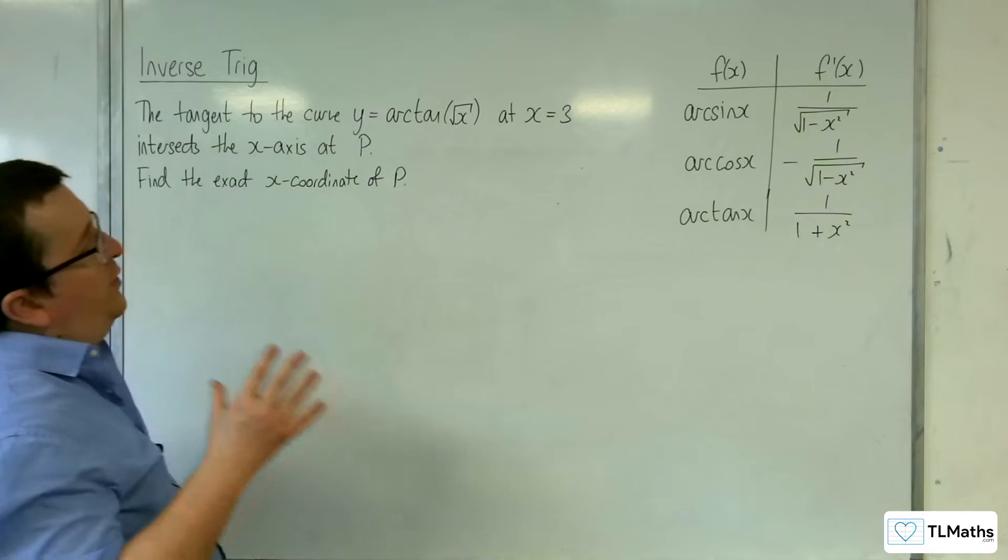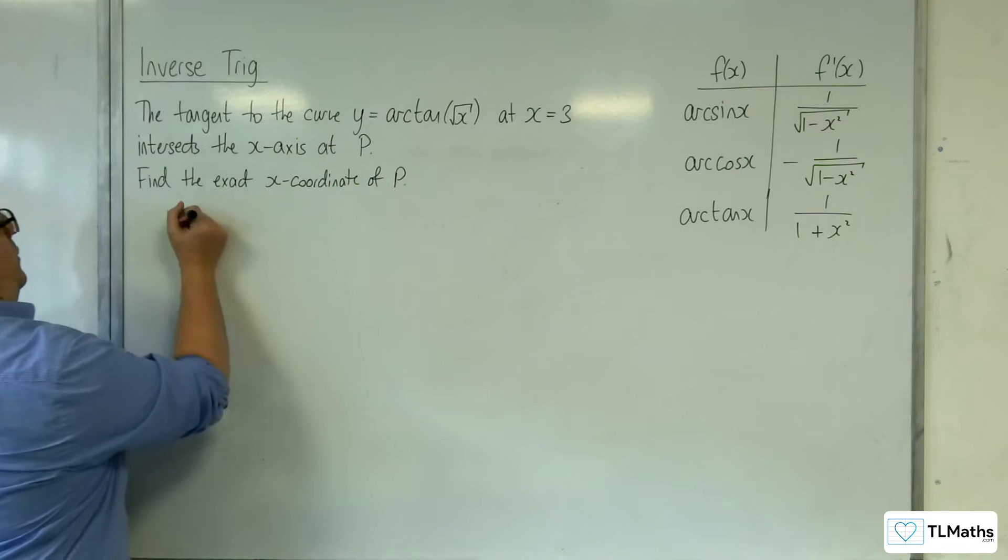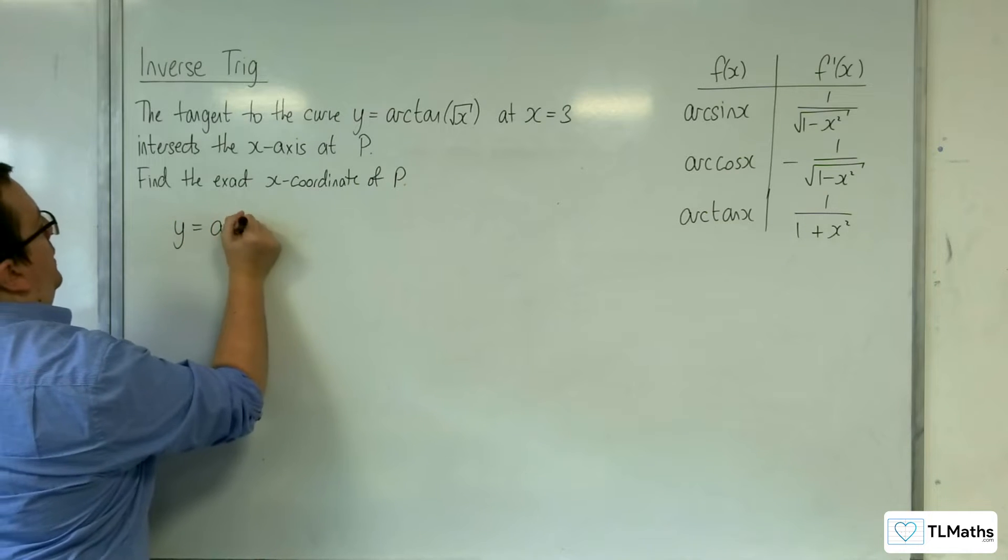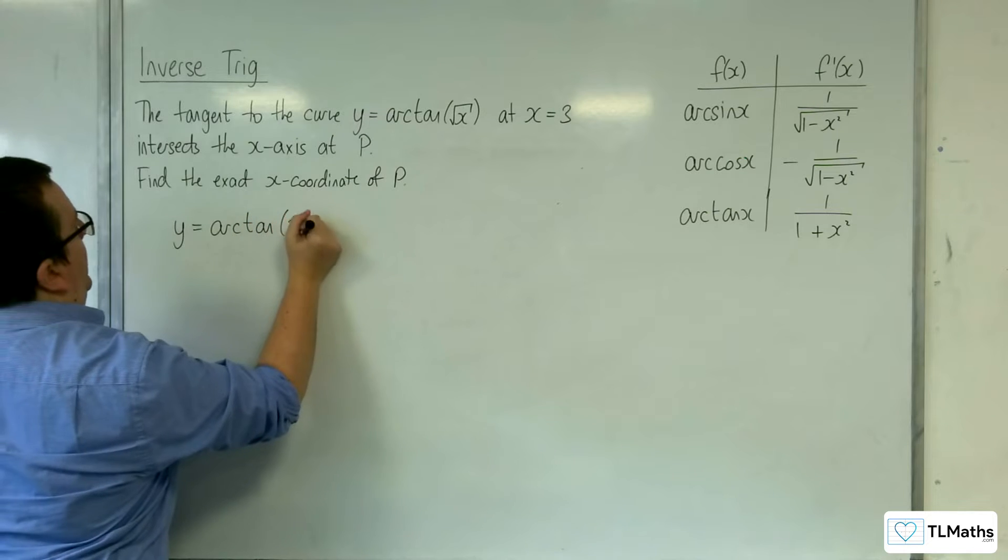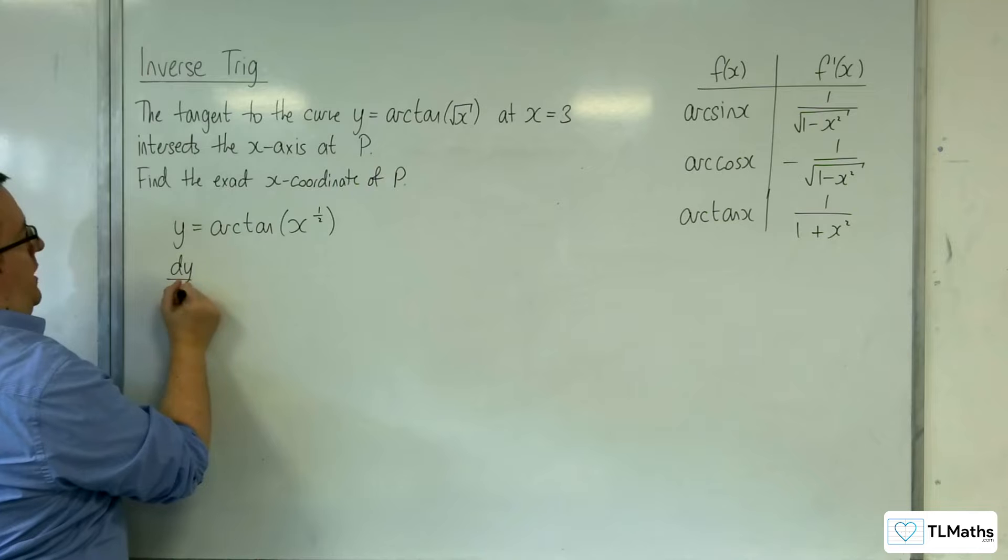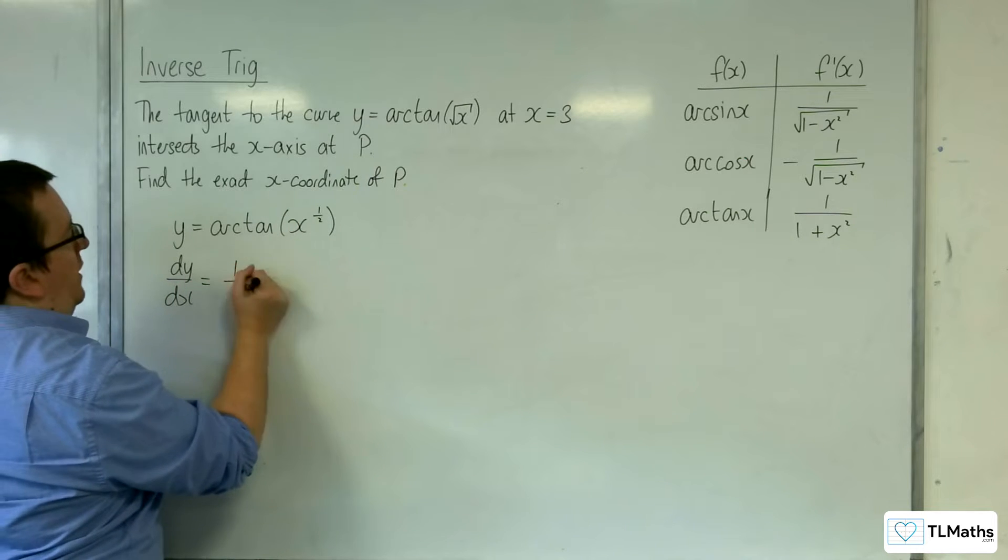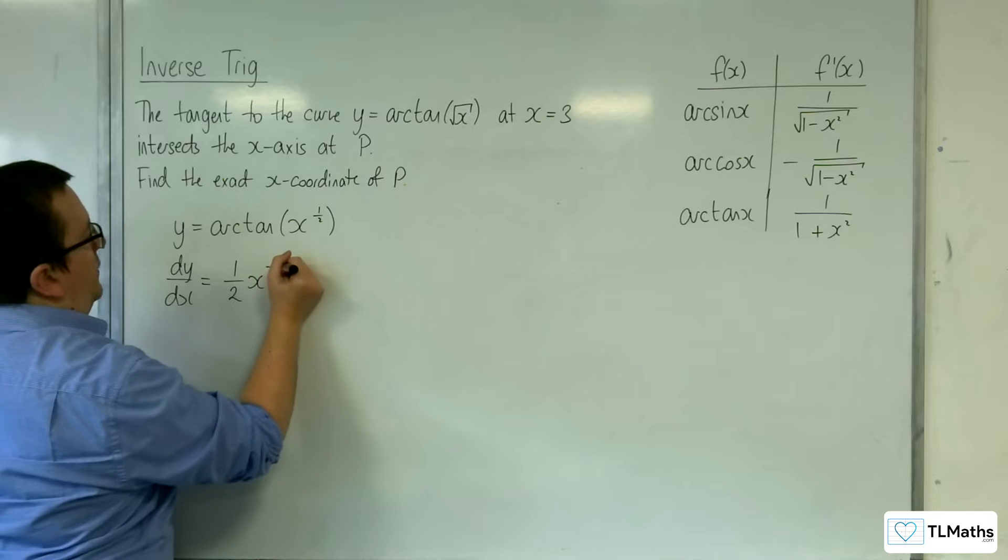So the first thing that we want to do is differentiate arctan of root x. So y equals arctan of x to the half will differentiate to, the derivative of the inside comes outside, which is 1 half x to the minus 1 half.